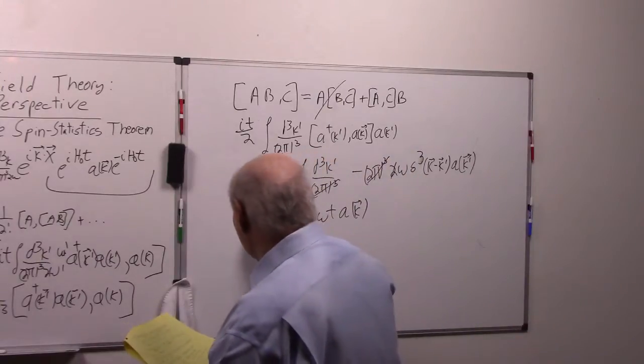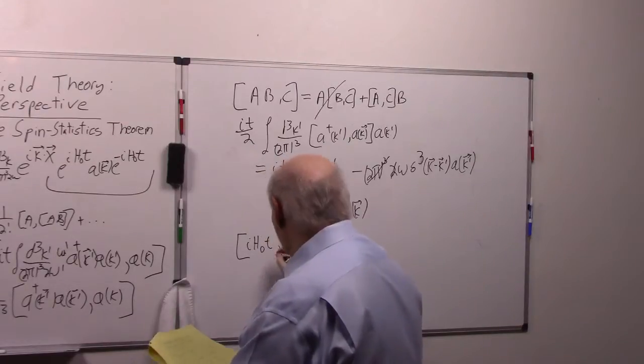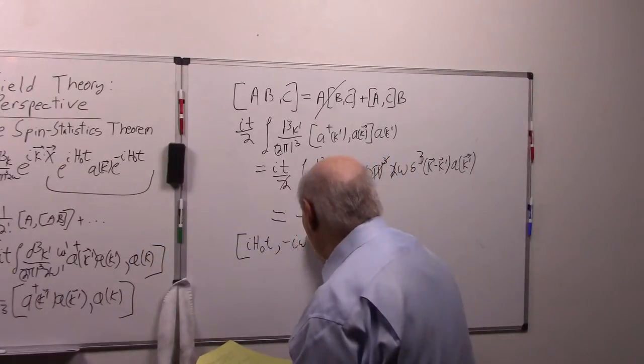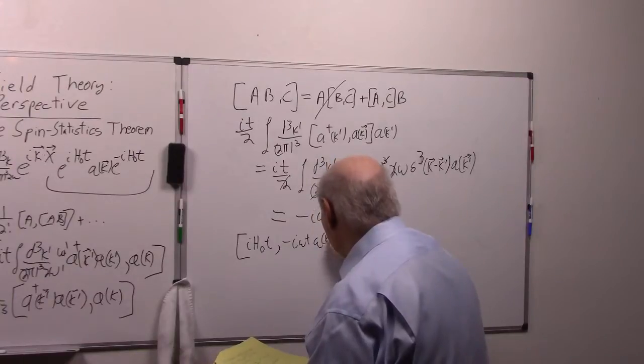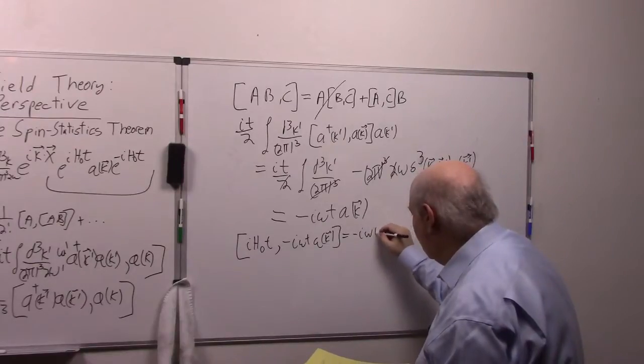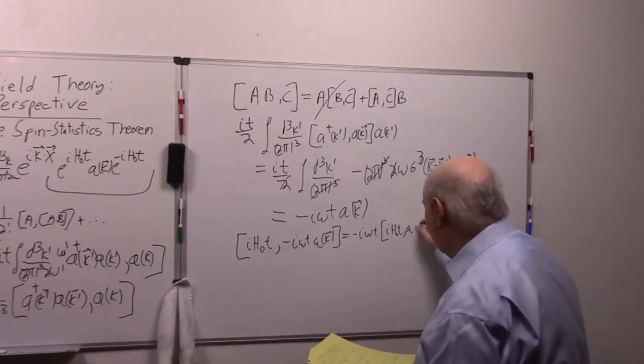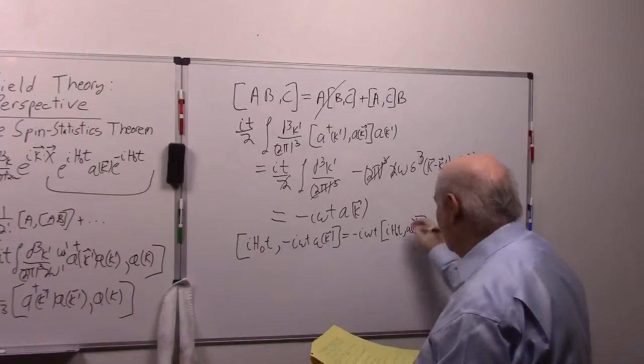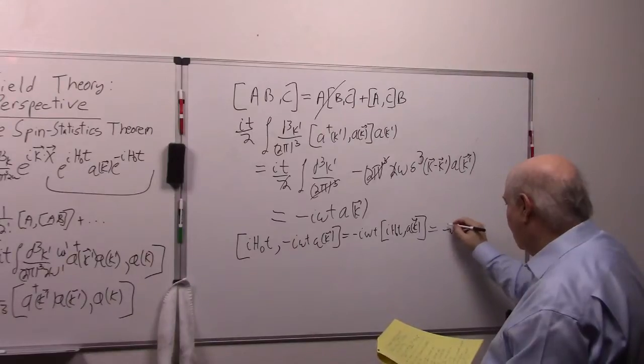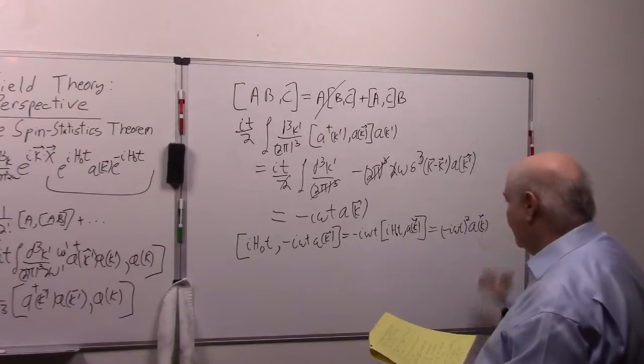Because the next one is just the commutator of A, which is IH∂T, comma the commutator of A with B we just figured out, minus IωT A(k). And this is just equal to—we can take the number out, scalar commutator of IH∂T comma A(k). And then we evaluated this, we got this, so we end up just getting minus IωT² A(k).